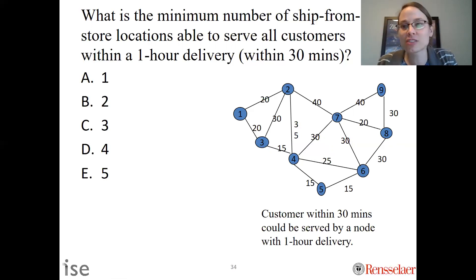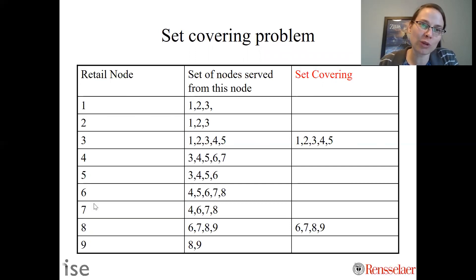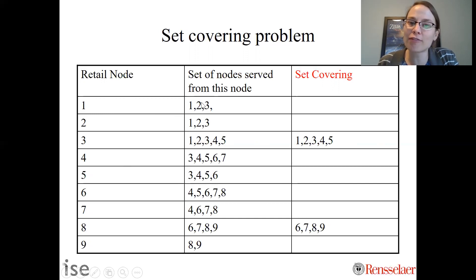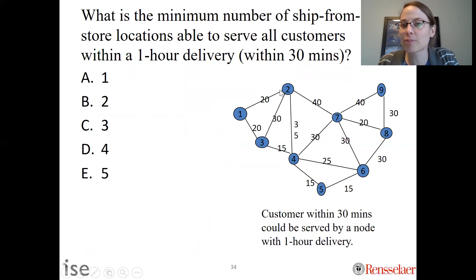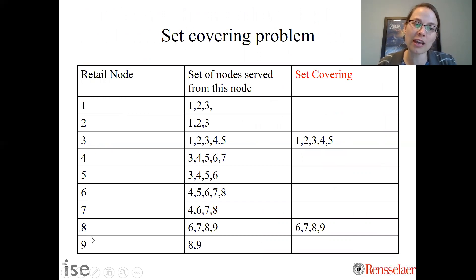We just solved a set covering problem. We had nine potential locations, and for each one we can determine which neighborhoods it covers within 30 minutes. For example, building at location 1 also covers neighborhoods 2 and 3 within 30 minutes. We want to pick the minimum number of retail nodes such that all nine neighborhoods are covered. The answer is to build at location 3 and location 8.